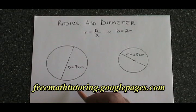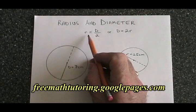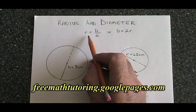So if you know the diameter is 7 cm, you can calculate the radius using this formula. Let's try it.